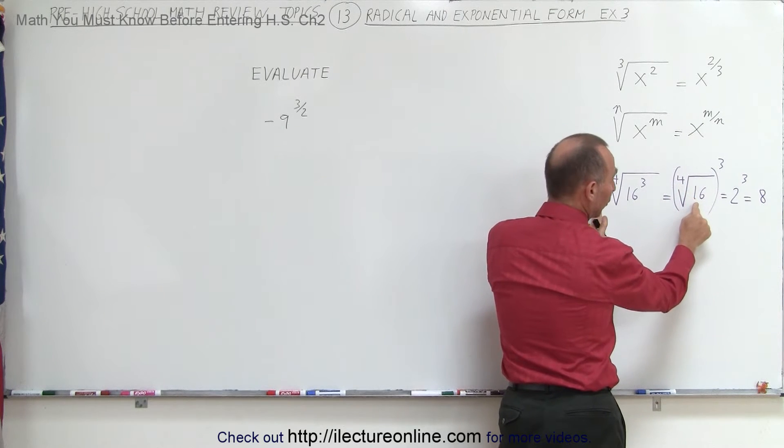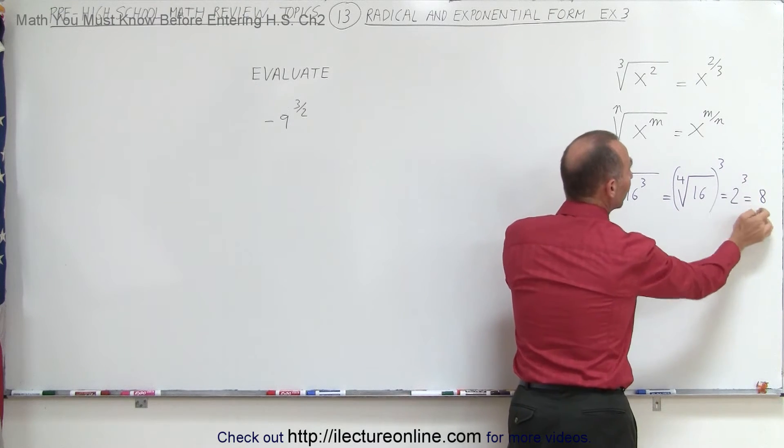Therefore, you can take the fourth root first. The fourth root of 16 is 2, and so this becomes 2 cubed, which is equal to 8.